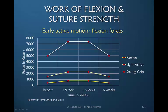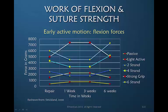When we superimpose the two graphs it becomes visually complex, but the most important thing is where the lines cross one another. For example, with a 2-strand repair, the repair strength at the 1-week and 3-week points falls below the amount of force needed to move a finger through light active flexion. This suggests that the 2-strand repair would not be strong enough to begin early active motion.